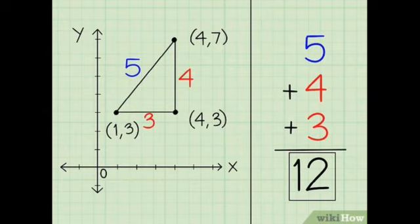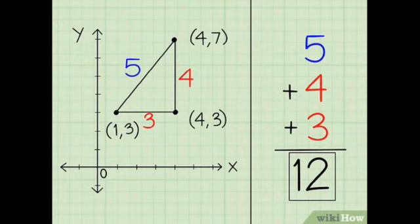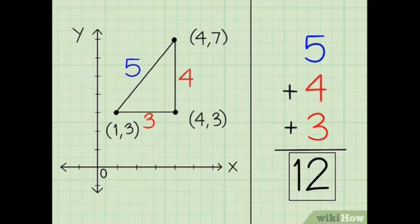Here the figure is a triangle. A triangle has three sides, so all three sides we must add. Here one side is 5 centimeters, the other one is 4, and the other one is 3 centimeters. We have to add all these three.